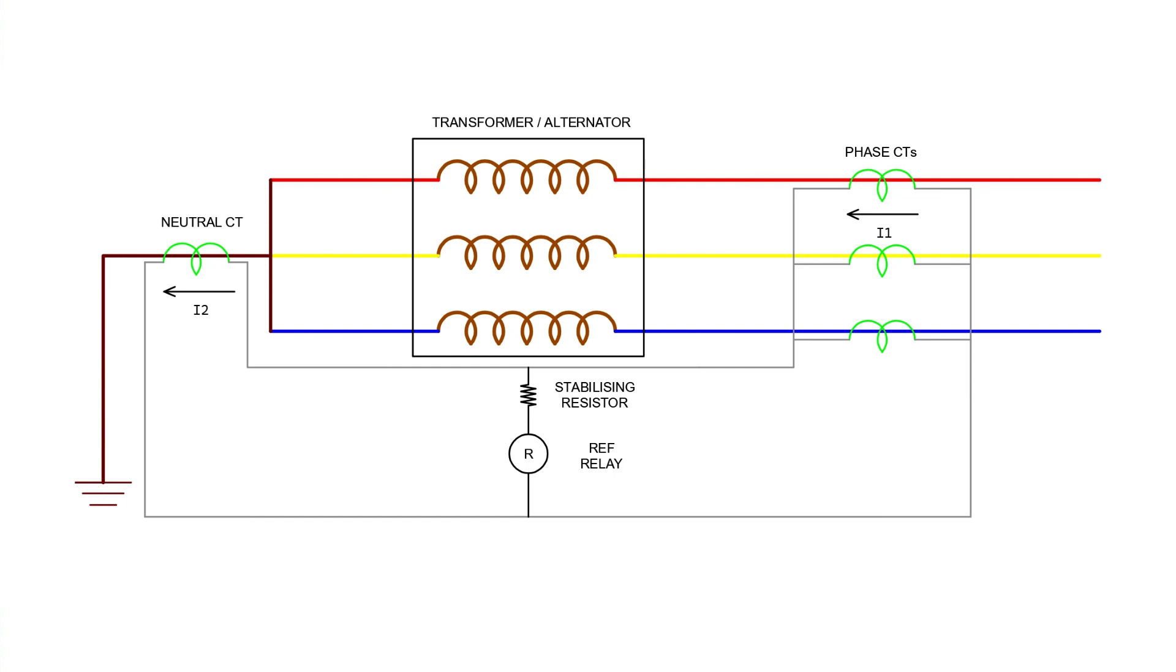In restricted earth fault scheme, the common terminals of phase CTs are connected to the secondary of neutral CT in such a manner that secondary unbalanced current of phase CTs and the secondary current of neutral CT will oppose each other. If these both currents are equal in amplitude, there will not be any resultant current circulates through the said closed path.